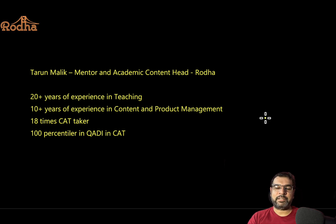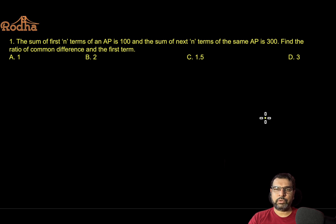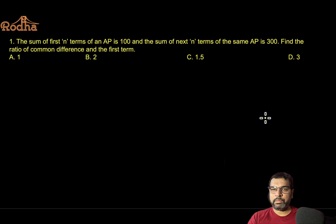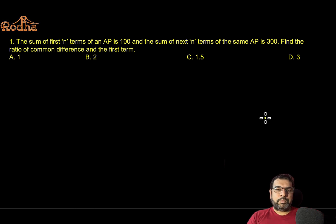Before I explain each question, pause the video, try it for about three minutes, then resume. Because this is a short-tricks session, I will not give you the proper approach — I'm only giving you the shortcut. So pause, give it a try, check your time. This first question is from CAT 2012 or 2013 as I remember.